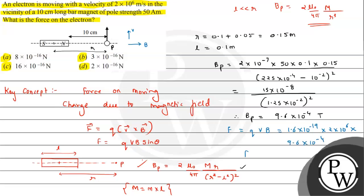On simplification we have 3.07 × 10^-16 Newton, very close to answer option B which is 3 × 10^-16 Newton. So I hope you understood the solution. All the best.